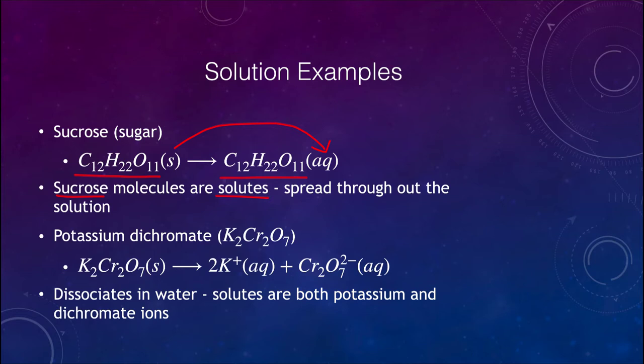For some materials like that they will remain, whereas some that dissociate as ions such as potassium dichromate here which is K2Cr2O7 will dissociate into potassium ions and chromate ions. So we will have two solutes in this case, potassium and the dichromate ions. So depending on the type of material it may dissociate or it may remain as individual molecules. Things like a salt will separate into ions and both are then the solutes.